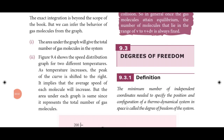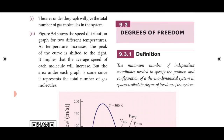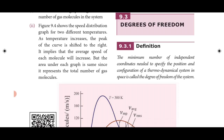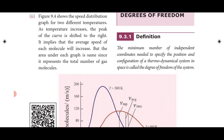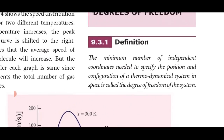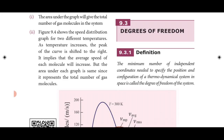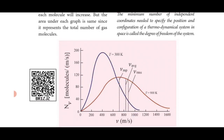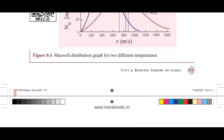Good afternoon students. Today in the ninth unit we are going to discuss degrees of freedom. Degrees of freedom is the minimum number of independent coordinates needed to specify the position and configuration of a thermodynamical system in space. That is the degrees of freedom of a system.